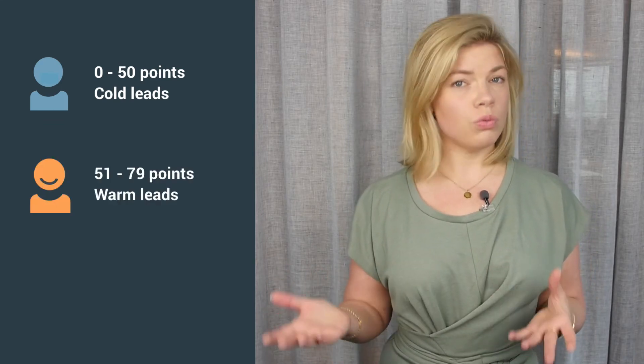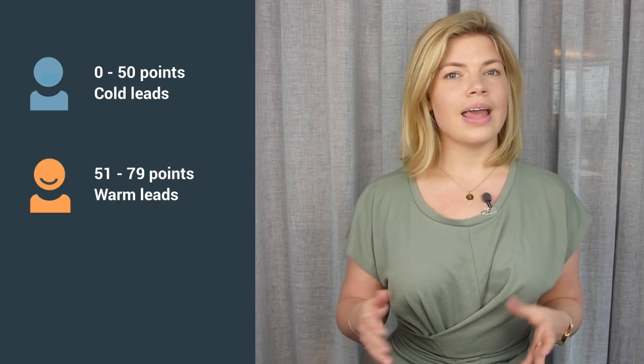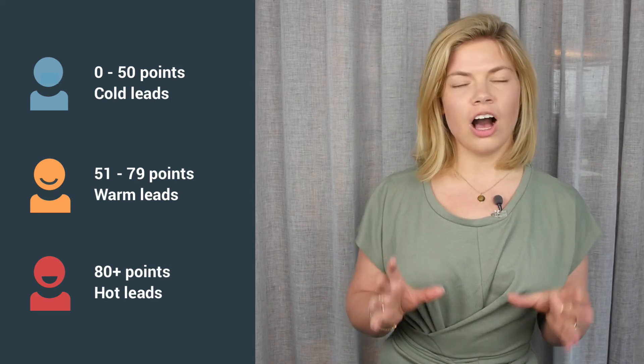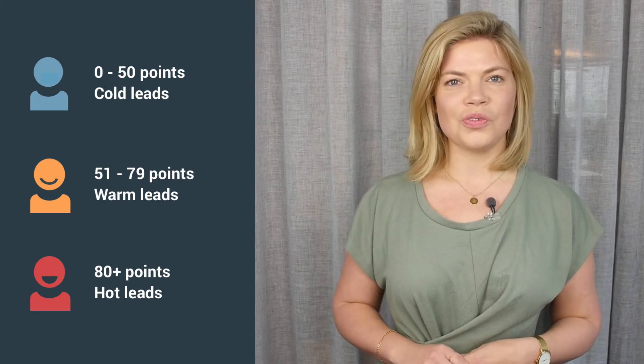Choose the score range you'd like to use. Most common is 0 to 100 points. Set your sales threshold — how many points should a lead have to be considered an MQL? You could set thresholds for each level of hotness. For example, 0 to 50 points is a cold lead, 51 to 79 is a warm lead, and 80 points or more means it's a hot lead and ready to be handed over to sales.